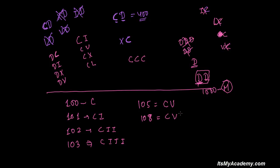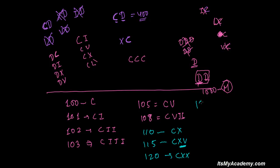For 108, I write C VIII. If writing 110, you write C X — that's 100 plus 10. For 115, you write C and then 15, which is X V. For 120, you write C X X. For 130, it is C X X X.